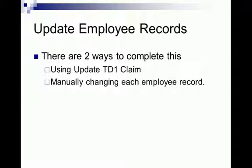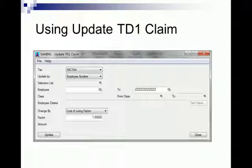You'll update the employee records. There are two ways to complete this: one, using the update TD-1 claim, or manually changing each employee record. Using the TD-1 claim, you'll pick the tax in which you would like to update. Select the employees from and to, or all of them. Put in the factor which the government provides you, then click Update. You'll need to do this for all taxes.